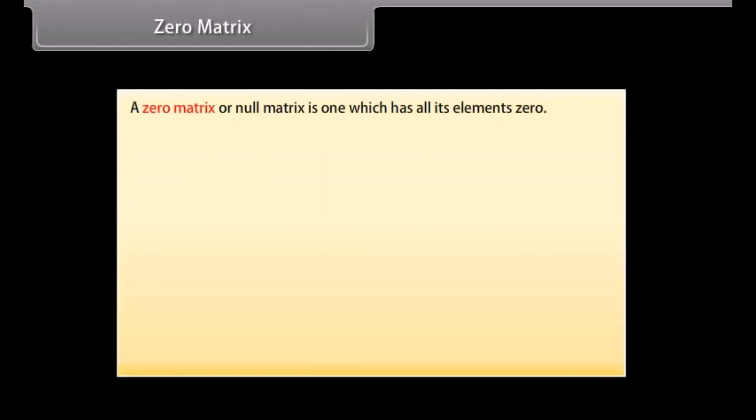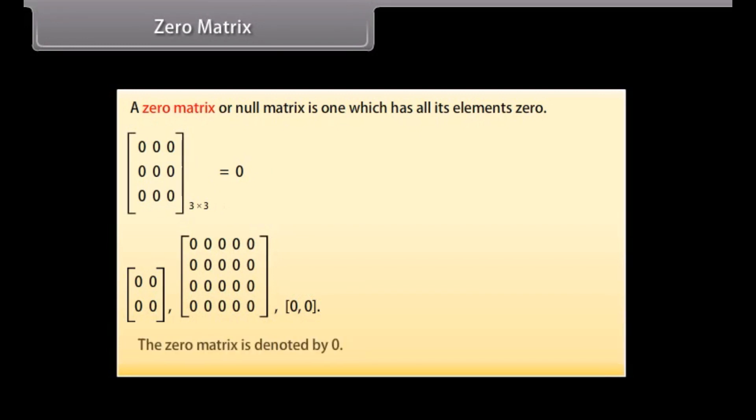Zero matrix. A zero matrix or null matrix is one which has all its elements 0. Here is a 3 by 3 zero matrix. These are 3 more examples of zero matrix. The zero matrix is denoted by 0.